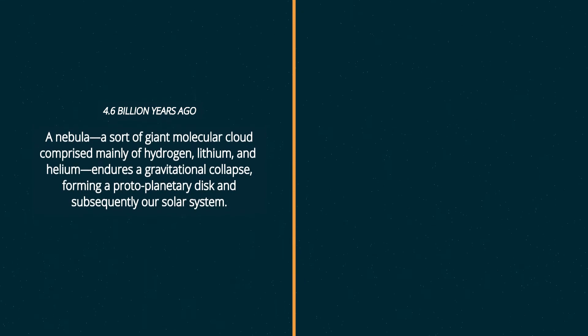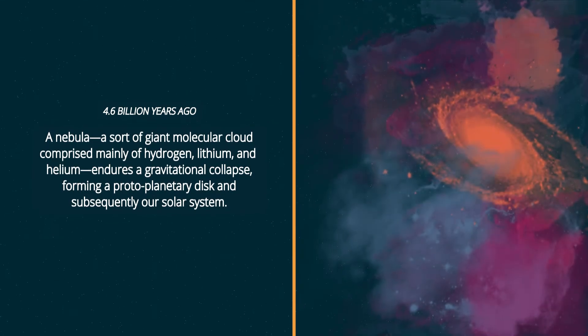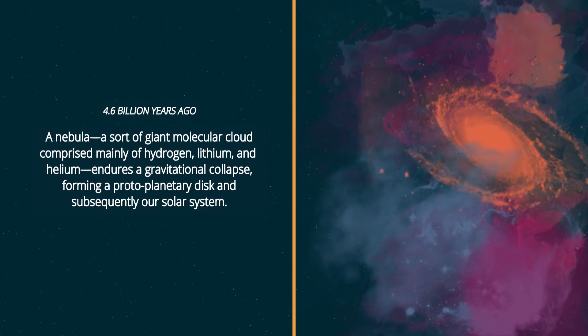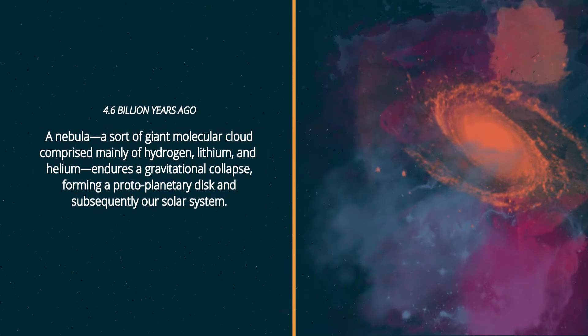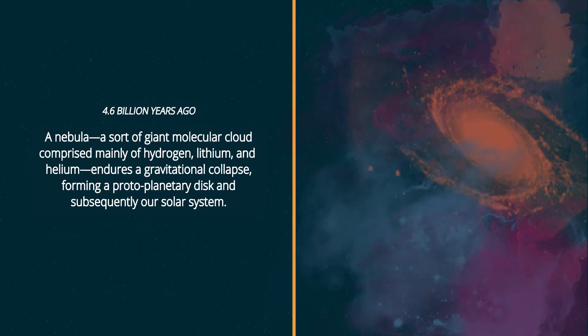4.6 billion years ago, a nebula, a sort of giant molecular cloud comprised mainly of hydrogen, lithium, and helium, endures a gravitational collapse forming a protoplanetary disk and subsequently our solar system.